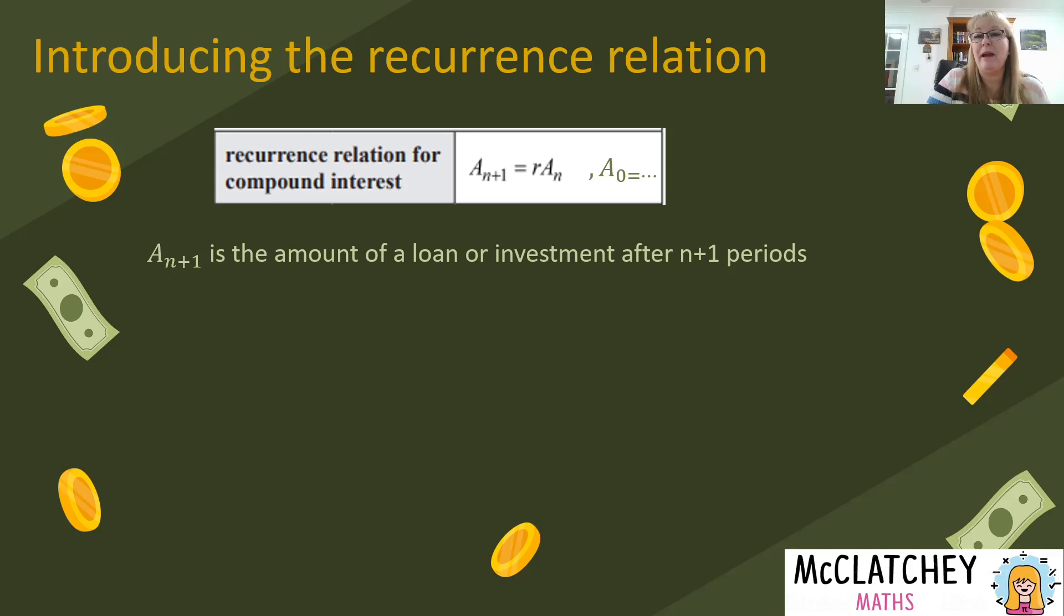So in the case of compound interest specifically, a subscript n+1 is the amount of a loan or an investment after n plus 1 periods. Now you might be thinking why n plus 1? Well because the left hand side of the equation is what results after we do something to the term before. So the term before is the nth term. So a subscript n is the amount of a loan or investment before the interest has been applied in the nth period.